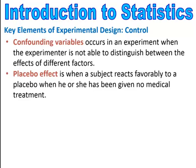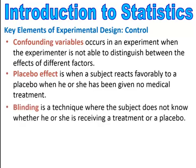The next is called the placebo effect. This is when a subject reacts favorably to a placebo when he or she has not been given any medical treatment. They are given some type of sugar pill, told that it's the medicine, and they feel better — and that's called the placebo effect. It's something they're feeling because they think they're getting the actual medicine. Blinding is a technique where the subject does not know whether he or she is receiving a treatment or a placebo, used in studies to get a clearer idea of the effects of the placebo or the actual treatment.